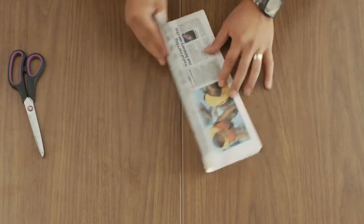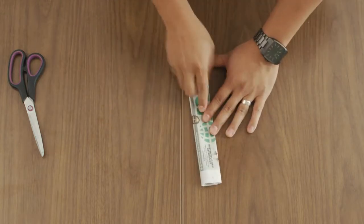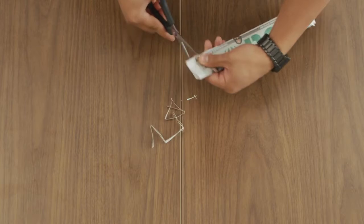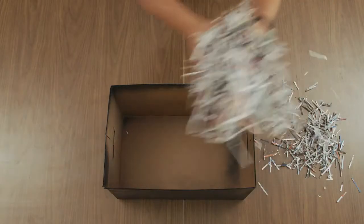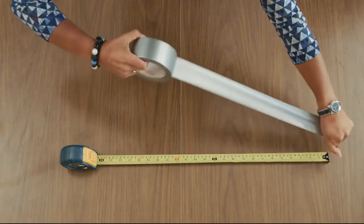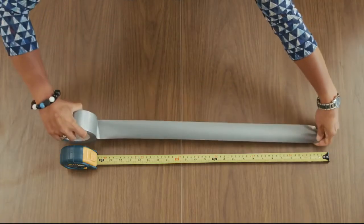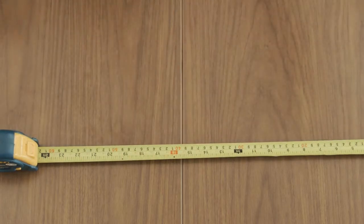Shred some newspaper by cutting it lengthwise into thin strips. Stuff shredded paper into the box. Cut four pieces of duct tape, 60 cm long, and set them aside.